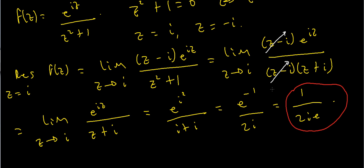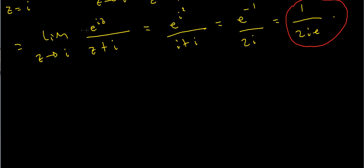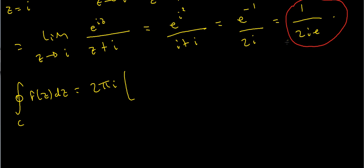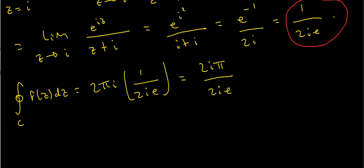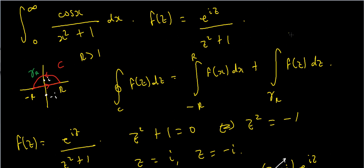Now I can use the residue theorem, since that's the only pole inside my contour. The residue theorem says the integral of f(z) dz over C equals 2πi times the sum of residues. There's only one residue here, so that's 2πi times 1/(2ie), which gives 2πi / (2ie). Cancelling the factor of 2i in numerator and denominator, I'm left with π/e. So the contour integral equals π/e. Now I need to deal with the remaining integral over γᵣ.